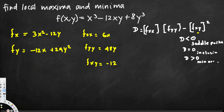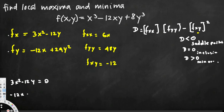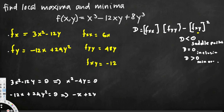Now we have everything we need. To find the critical points, we equate the first derivatives to 0. So we set 3x² − 12y = 0, and also −12x + 24y² = 0. Simplifying the first equation by dividing by 3 gives x² − 4y = 0. Dividing the second equation by 12 gives −x + 2y² = 0. Now we have two equations with two unknowns.